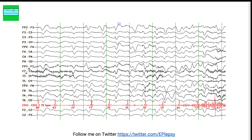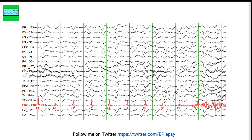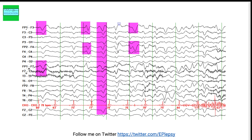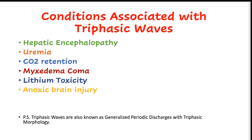The next two pages show triphasic waves. Triphasic waves can be seen in a number of conditions. The most common include hepatic encephalopathy, uremia, CO2 retention, myxedema coma, lithium toxicity, and anoxic brain injury. If you see triphasic waves, consider checking the ammonia level — hyperammonemia as seen with hepatic encephalopathy is associated with triphasic waves.